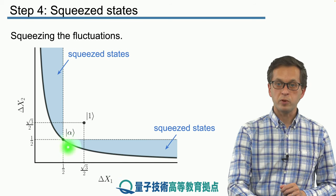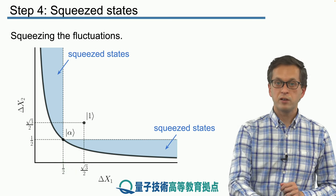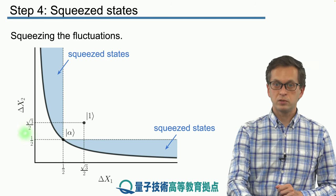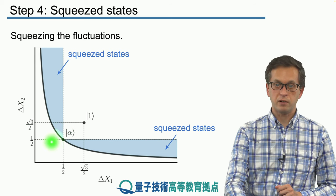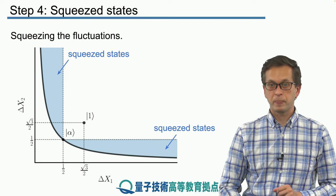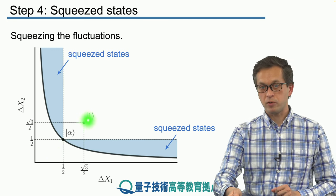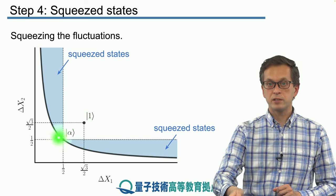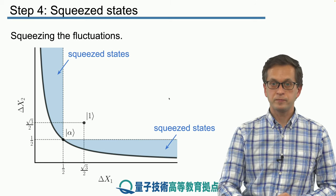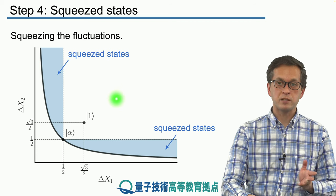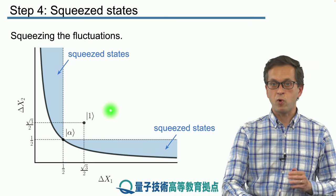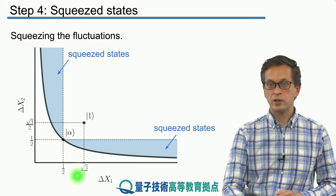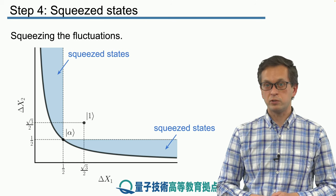For coherent state alpha, the fluctuations in the position quadrature are 1/2, equal also to the fluctuations in the momentum quadrature, so the coherent state lies at that point — as does the vacuum. If we increase the number of photons, we move up and away from that point. The white square region represents all states which are not minimum uncertainty states — number states 1, 2, 3, and higher. For number state 1, delta x1 equals the square root of 3 over 2, and similarly for the momentum quadrature.